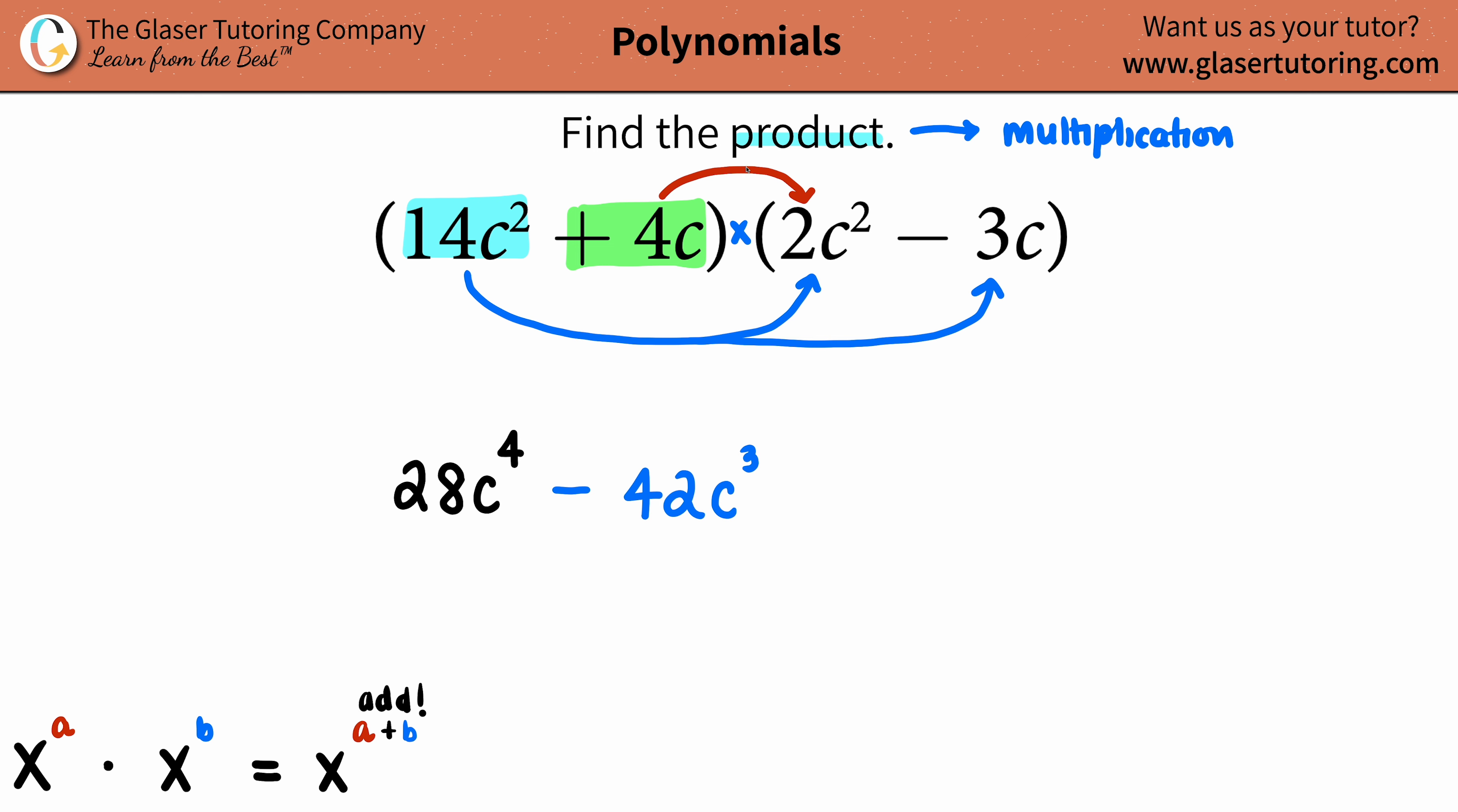But what is the negative 3c going to say? I want to be multiplied too. So the 4c says okay, we got to do that because we must be fair.